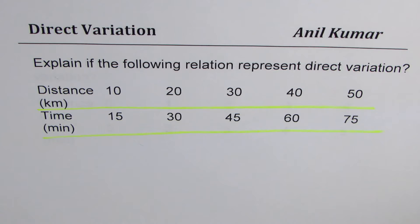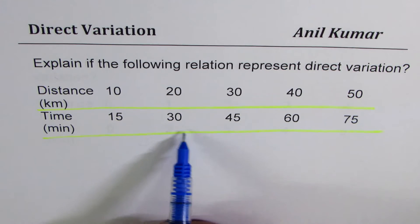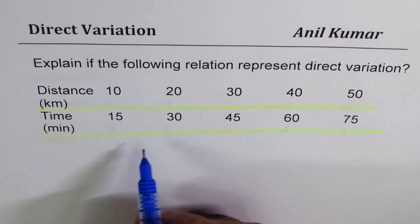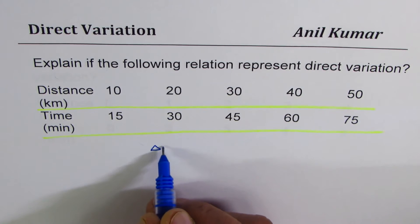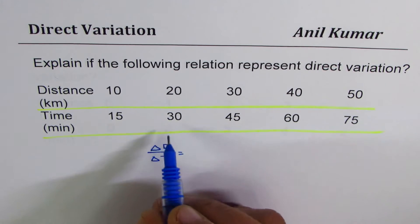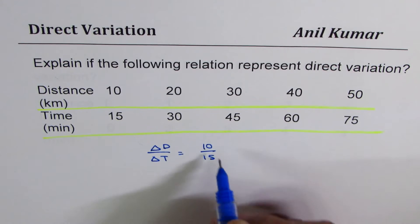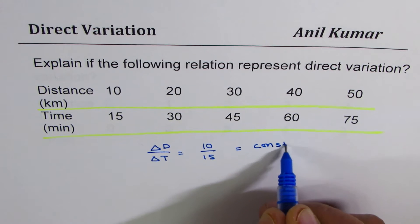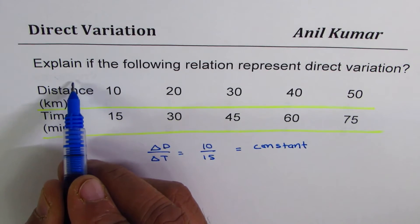You can pause the video, answer the question, and then look into my suggestions. Well, from here you can see that as time increases by 15, now time is independent variable. So every change in 15 for time, the distance is changing by 10. So we find that change in distance over change in time is basically 10 over 15, which is constant.